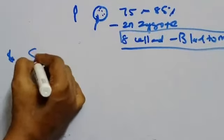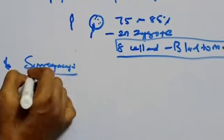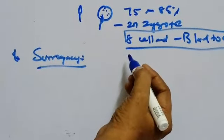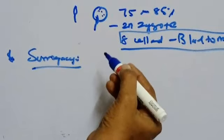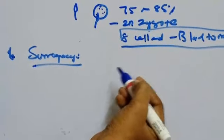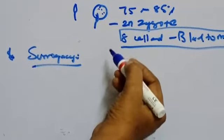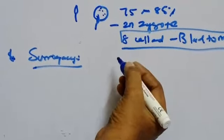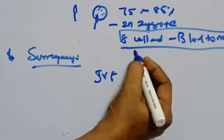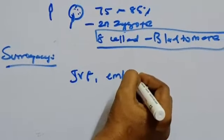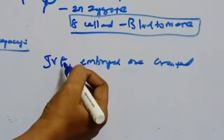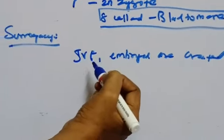The next method is surrogacy. Surrogacy is a method of assisted reproduction whereby a woman agrees to carry a pregnancy for another person, and those persons will be the parents of the newborn child. This is done through in vitro fertilization — embryos are created and then transferred into the surrogate mother's uterus.